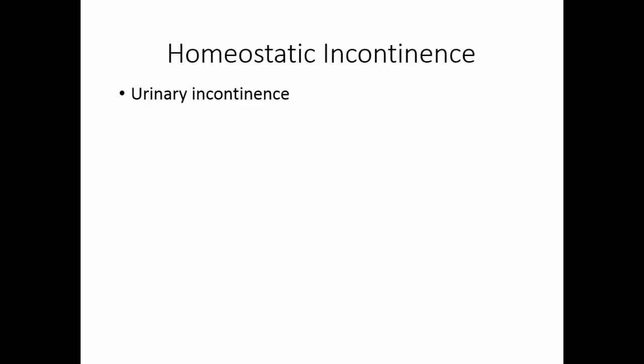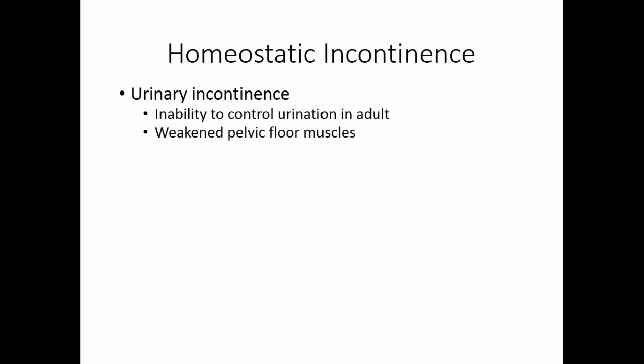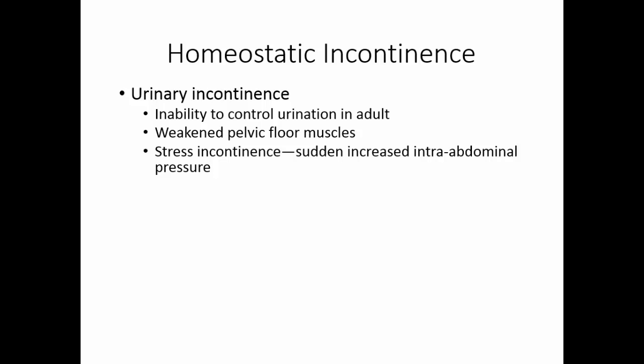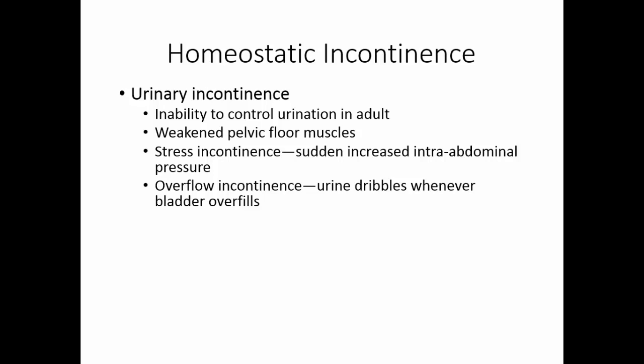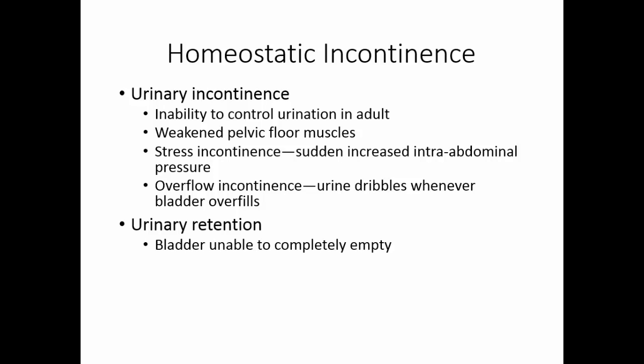Urinary incontinence is an inability to control urination in an adult, usually the result of weakened pelvic floor muscles. Stress incontinence occurs when a sudden increase in intra-abdominal pressure causes urine to leak from the urethra. Overflow incontinence occurs when urine dribbles whenever the bladder is overfull. Urinary retention is when the bladder is unable to completely empty — this is fairly common after general anesthesia, which is why after outpatient surgery they want to make sure you urinate once before going home.